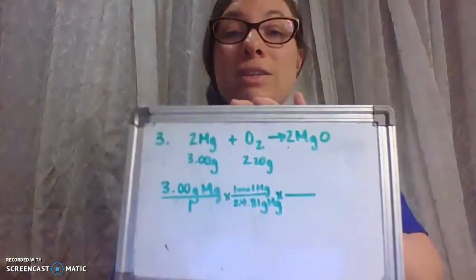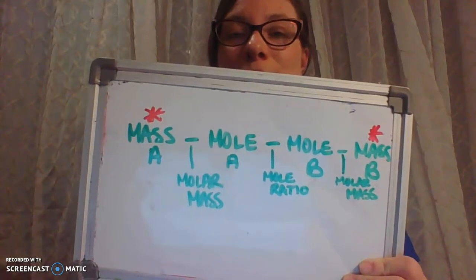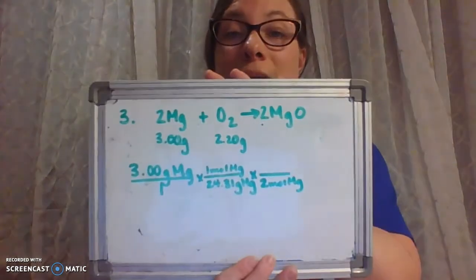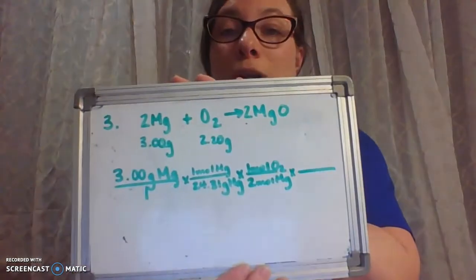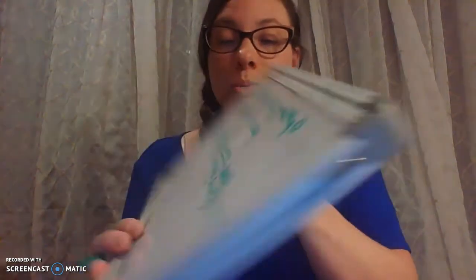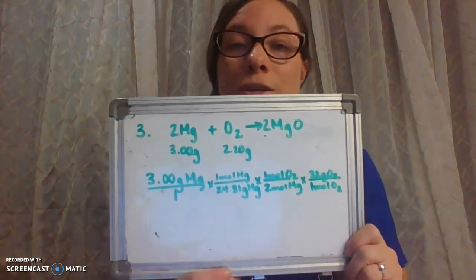The next step on the roadmap is the mole ratio, going from moles of substance A to moles of substance B. From our balanced equation, we put two moles of magnesium on the bottom to cancel out moles of magnesium, and one mole of oxygen on top. Then we convert moles of oxygen into grams: one mole of O₂ goes on the bottom and 32 grams on top, since oxygen is 16 grams per mole and O₂ is 16 times 2.